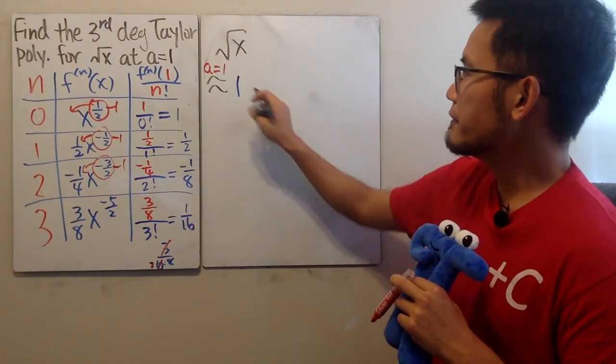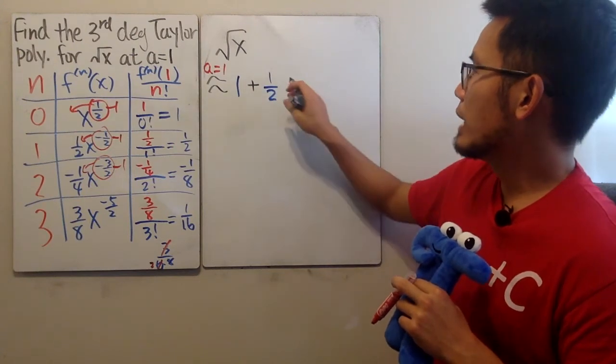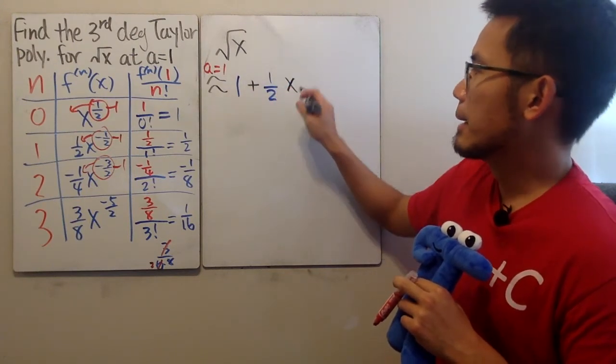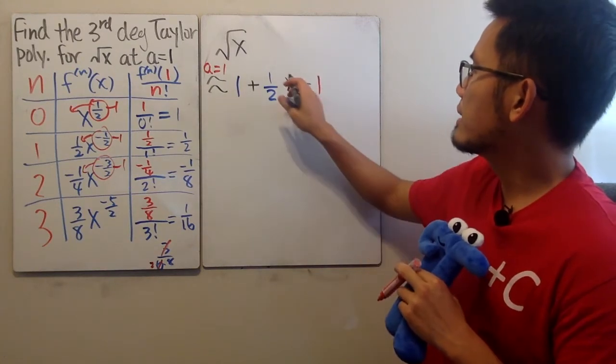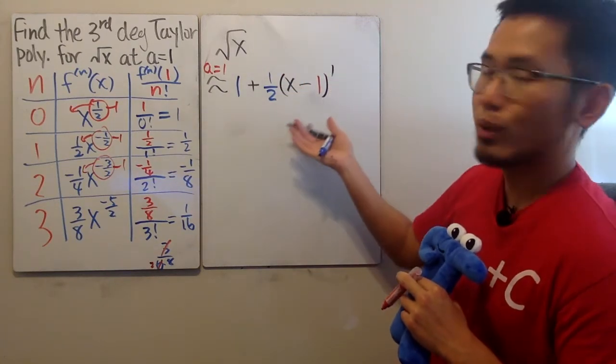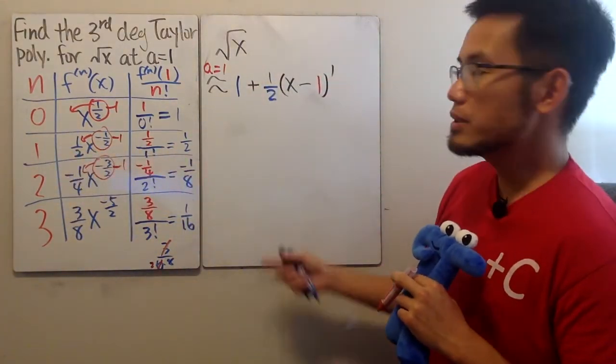Next, we have 1 half. So we have to add 1 half. And then we have to multiply by x minus the center, which is 1. And then raise that to the first power. Right? So that's what this is telling us. And we'll just continue.